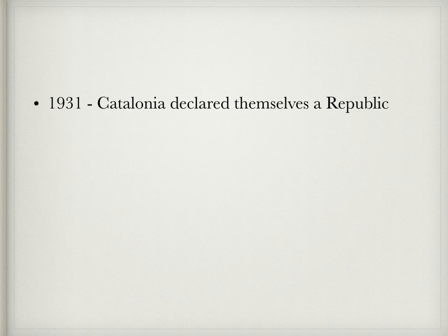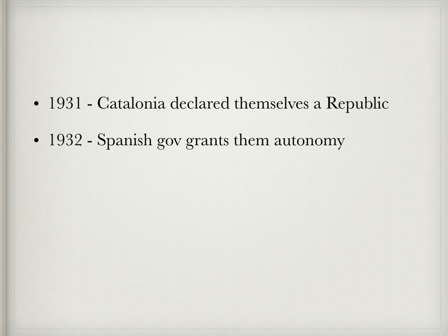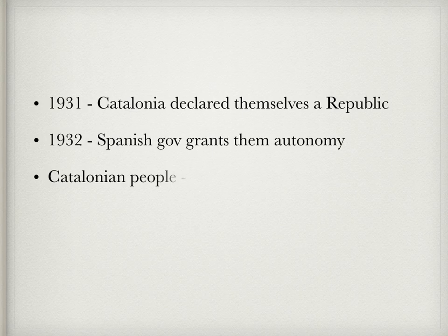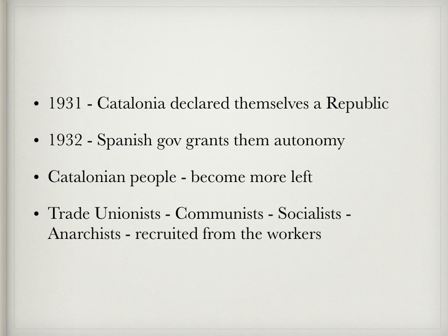In 1931, Catalonia for a short time declared itself a republic. In 1932, the Spanish government granted them autonomy — not independence, but more self-governance. As a result, the Catalonian people gradually moved toward the left side of the political spectrum. Trade unionists, communists, socialists, and anarchists recruited supporters among the workers.